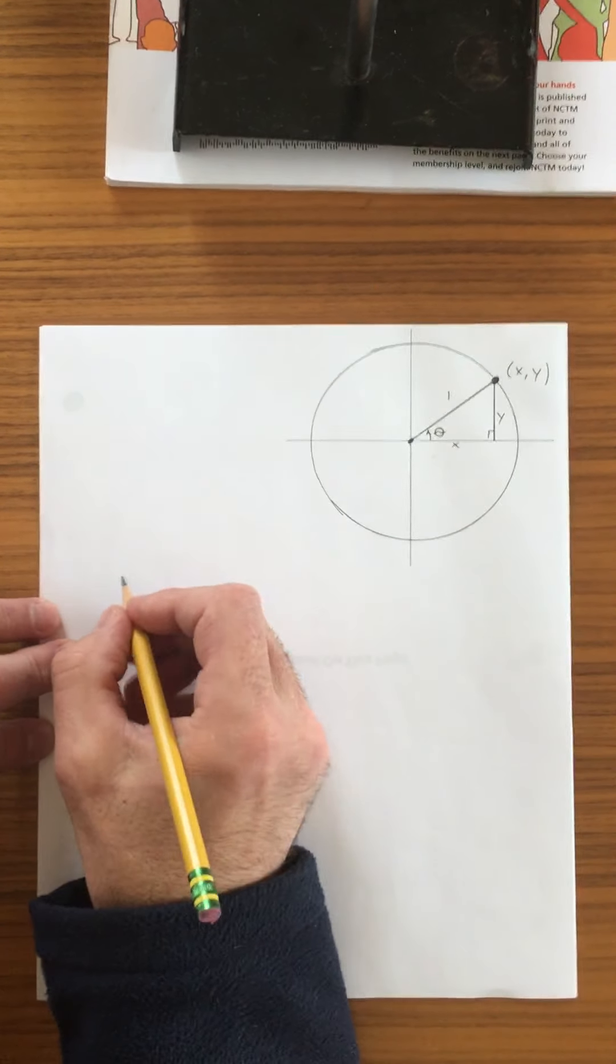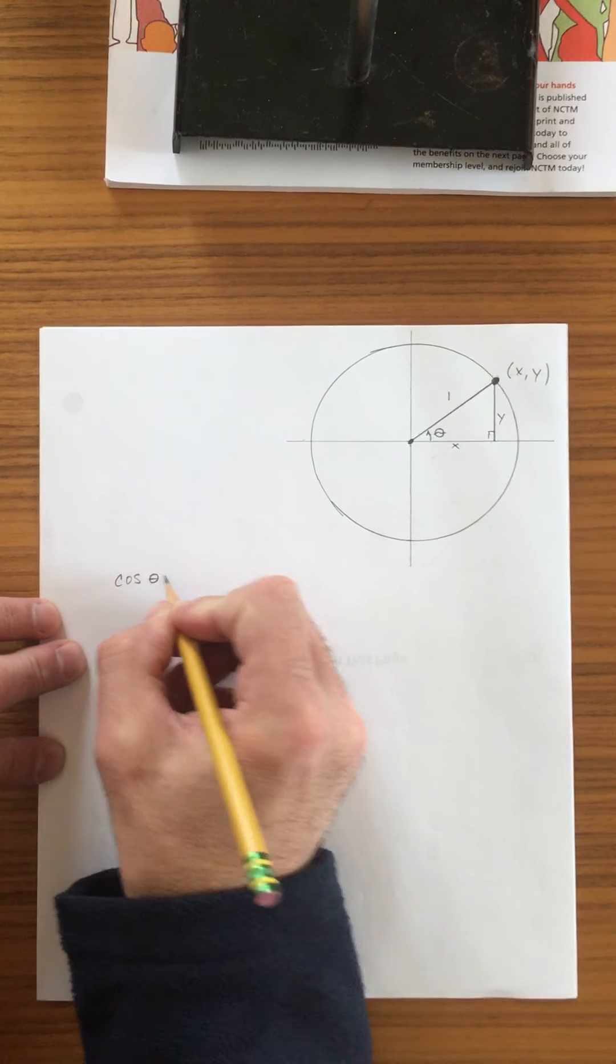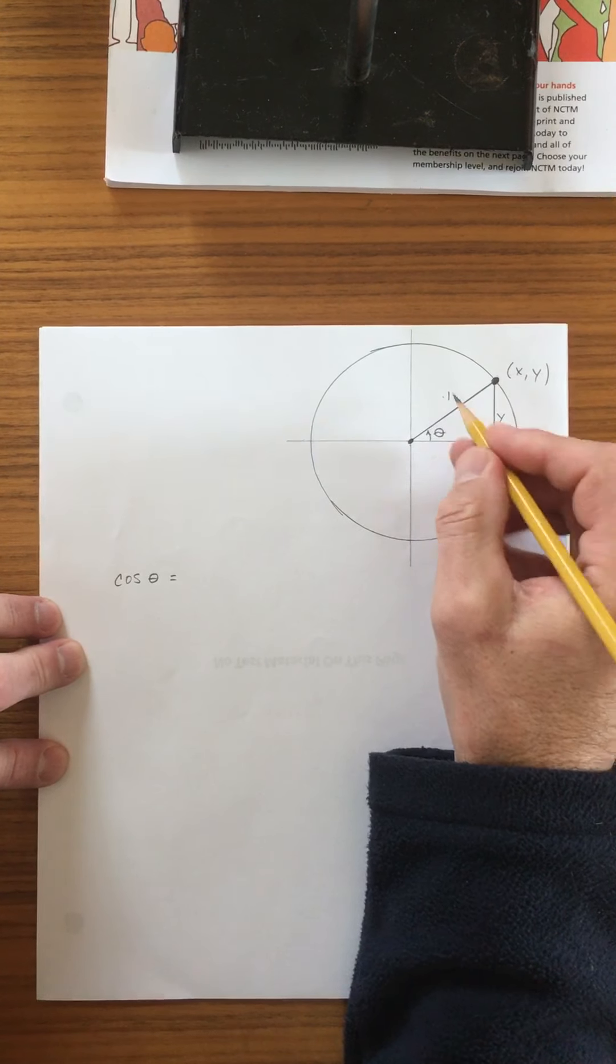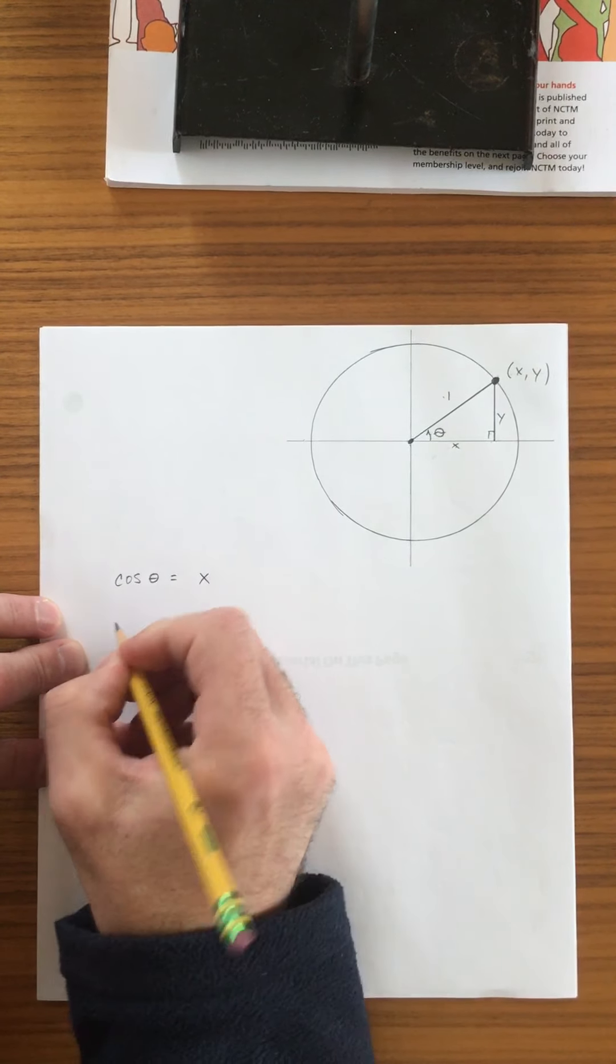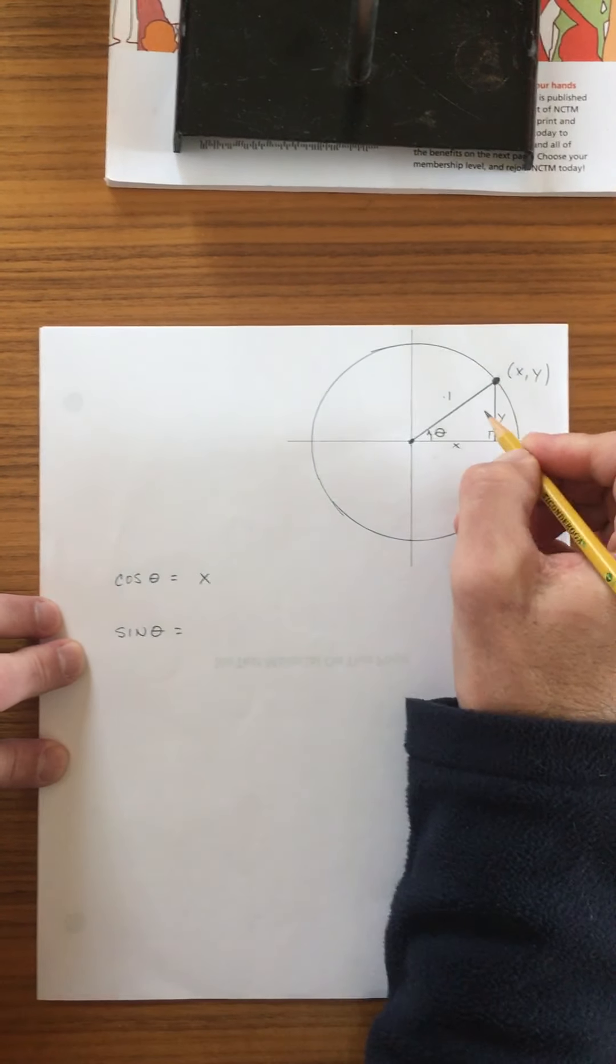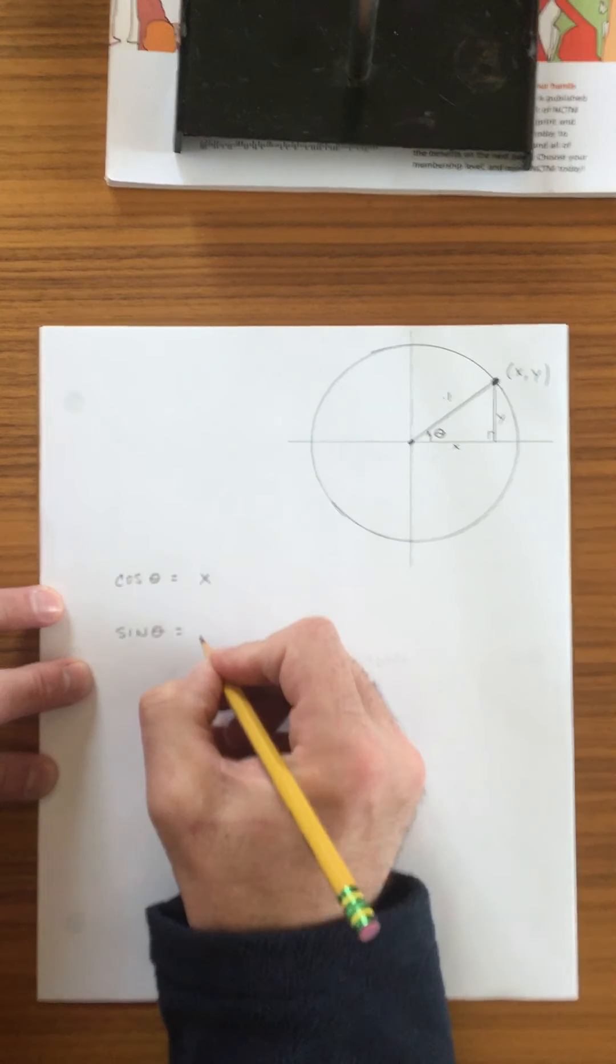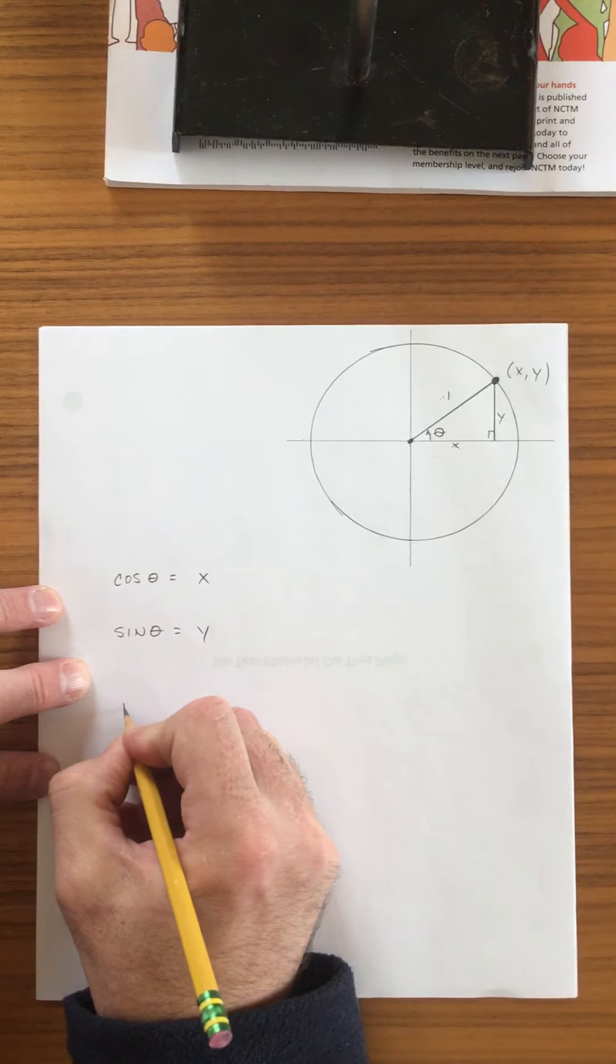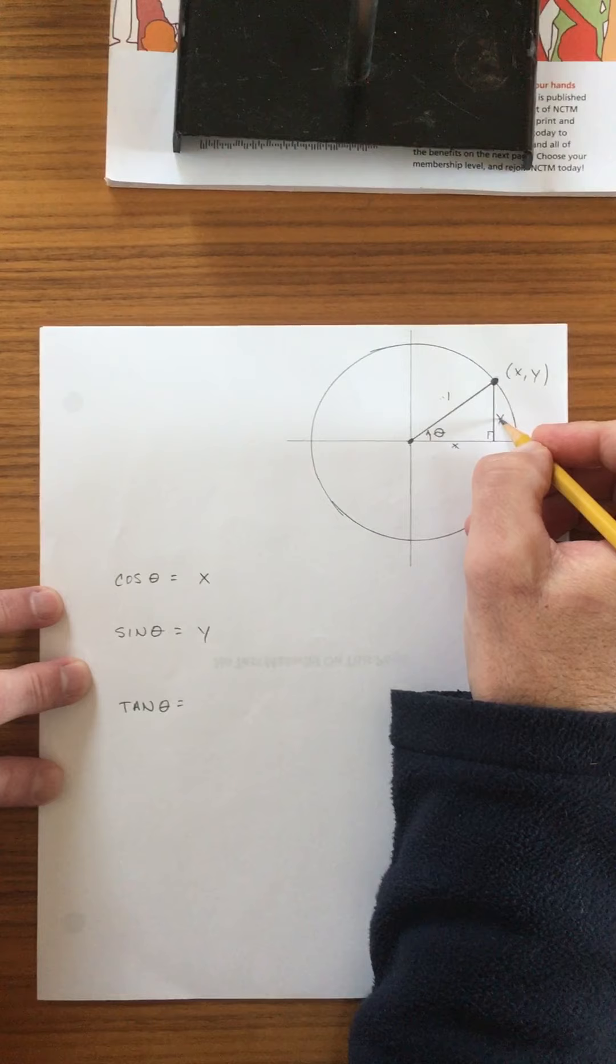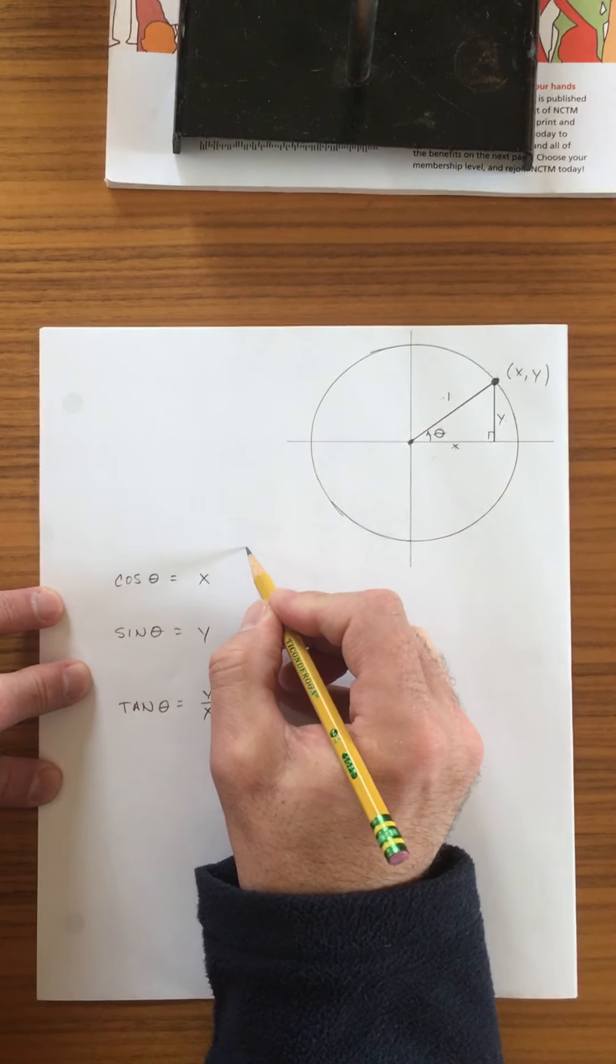Now, we said that the cosine of the angle is adjacent over hypotenuse, or x over one. And we said that the sine of an angle is opposite over adjacent, or y over one. And we said that the tangent of an angle is opposite over adjacent, or y over x.